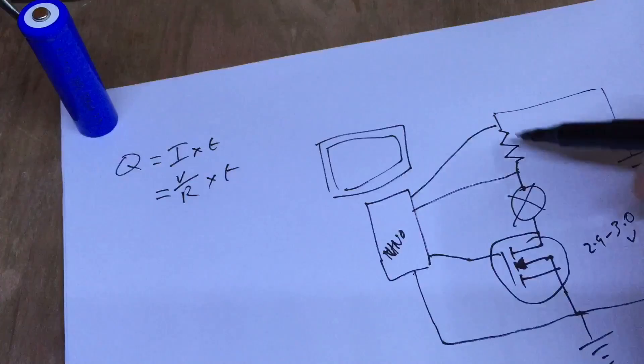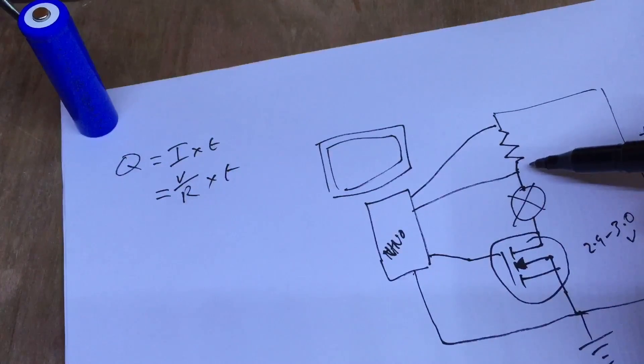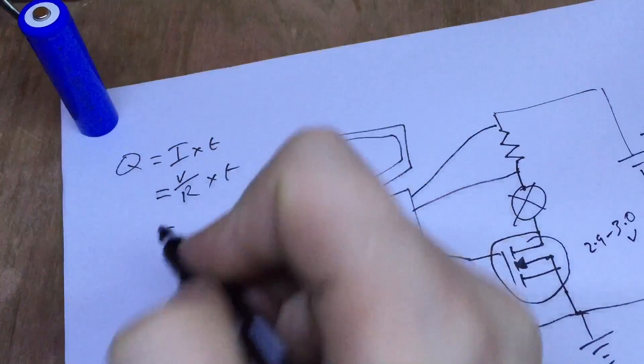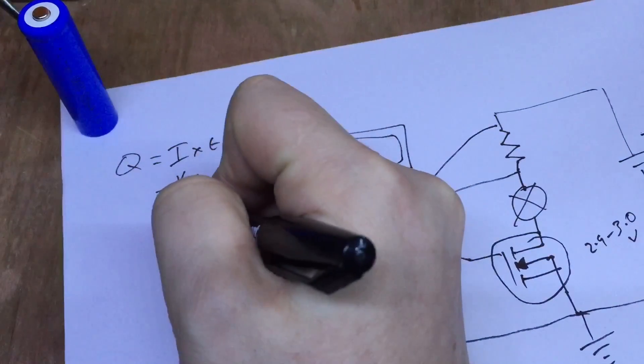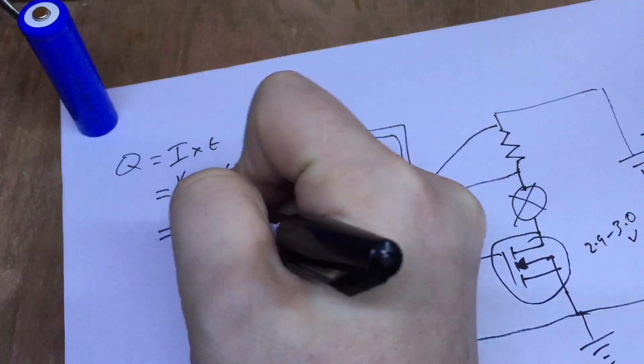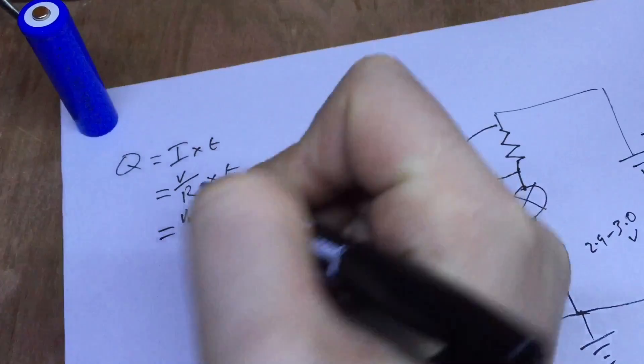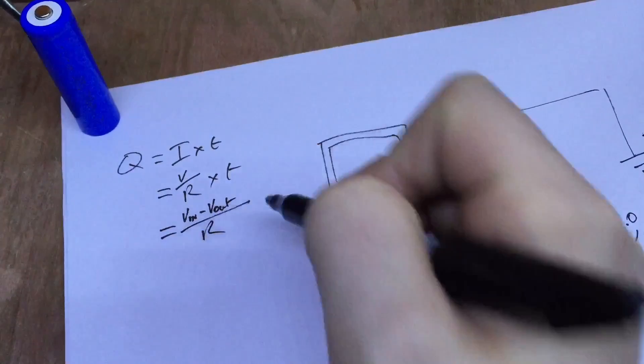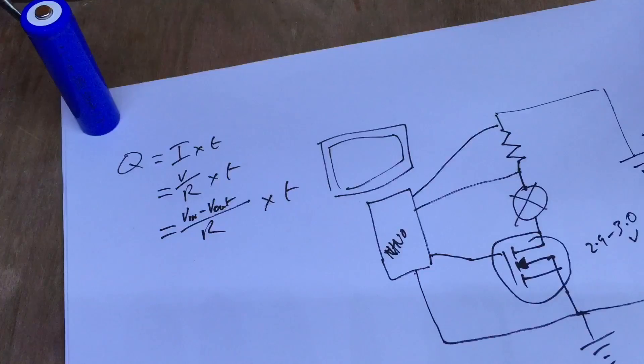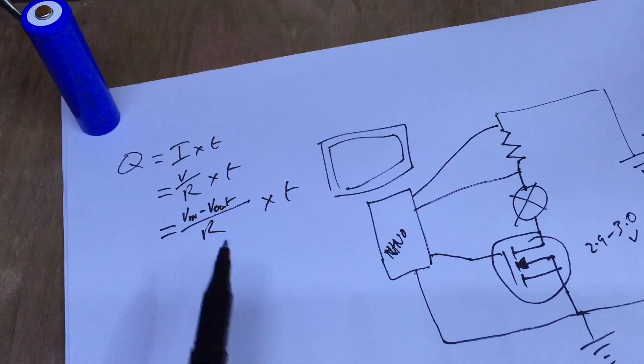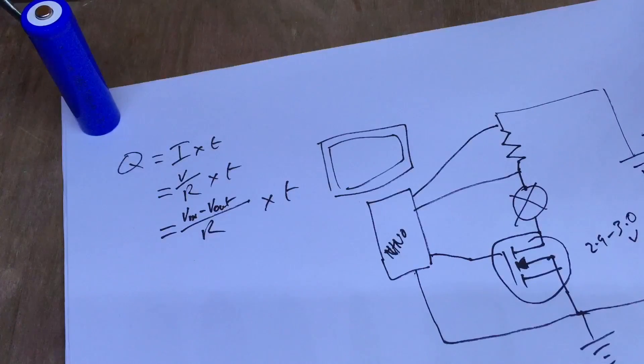But we're looking at the voltage drop across this resistor here. So actually, the sum we need our Arduino to do is V_in minus V_out over R times time. Because as this battery and its voltage goes from 4.2 past 3.7 all the way down to 3 volts, this will be changing. We can't just put a load on it and start a timer, because that won't give us an accurate result.